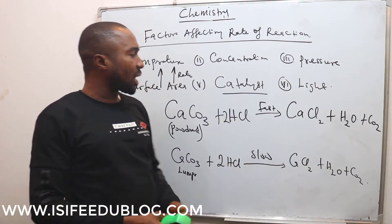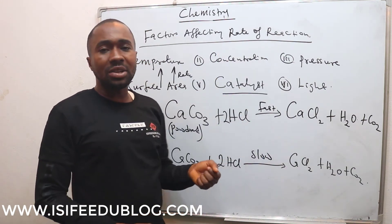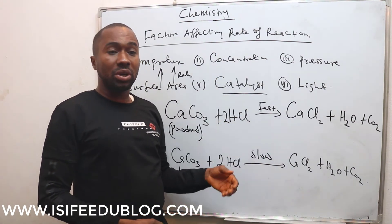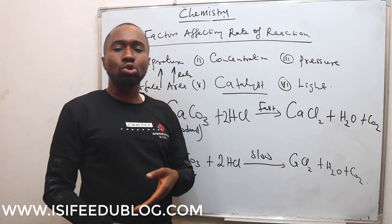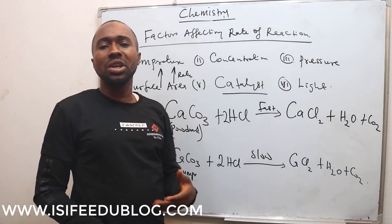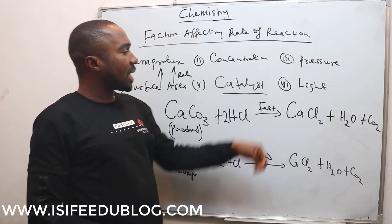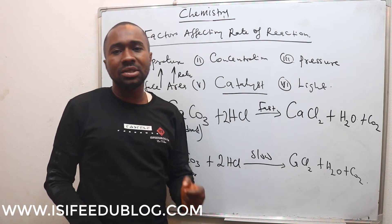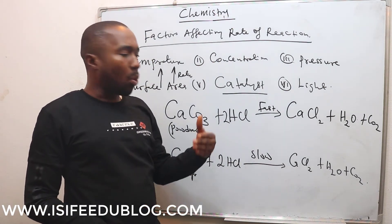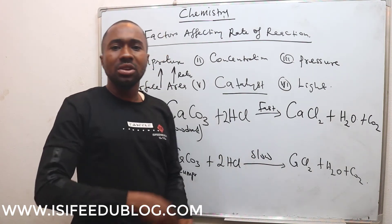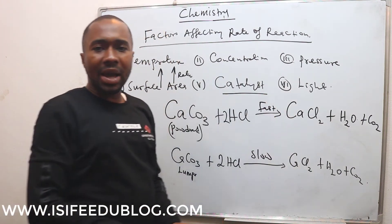If it is a positive catalyst, the rate of reaction will be increased. But if it is a negative catalyst, the rate of reaction will decrease. The action of a positive catalyst is to lower the activation energy of the reaction. So whenever you add a catalyst to a reaction, the work of the catalyst is to lower the activation energy of the reaction. And once the activation energy is lowered, the rate of reaction will increase.